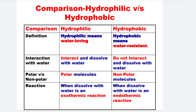Here is the comparison between hydrophilic and hydrophobic substances. Number 1 Definition: hydrophilic means water loving, on the other hand hydrophobic means water resistant. Next is Interaction with water: hydrophilic molecules easily interact and dissolve with water, on the other hand hydrophobic substances do not interact and dissolve with water.